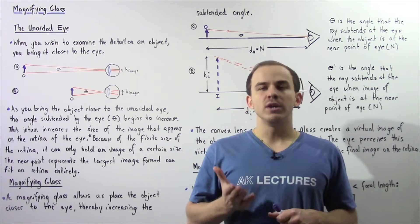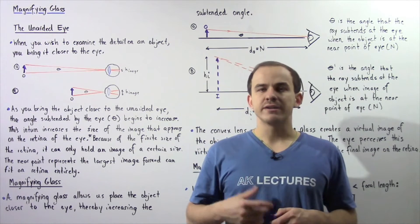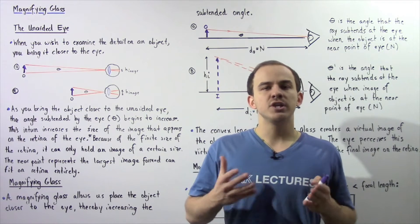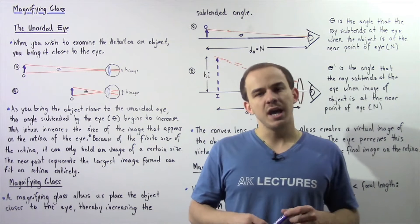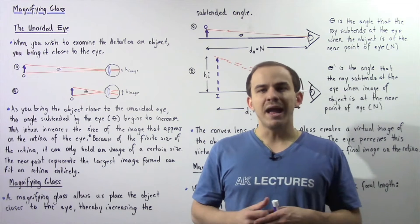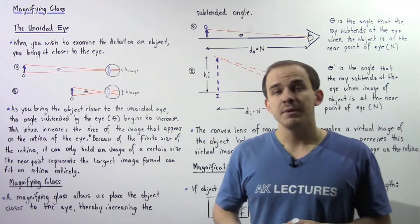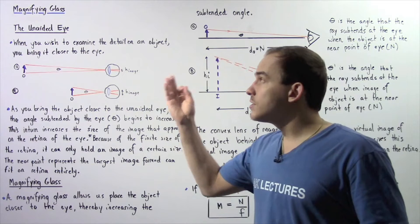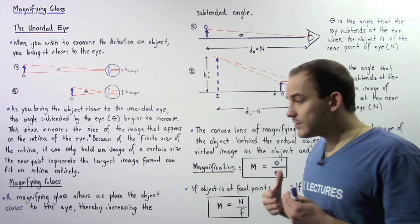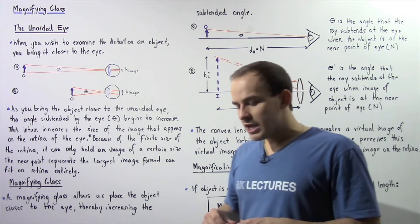A magnifying glass is one type of optical instrument that allows us to increase the size of the object that is perceived by the eye. Before we discuss the workings of the magnifying glass, let's examine how we can use the unaided or naked eye to essentially magnify our objects.